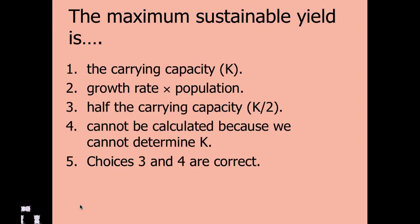Pause the video while you think about the question and begin it again once you get your answer. Hopefully you realize that choices three and four are correct: mathematically, the maximum sustainable yield is half of the carrying capacity, but because we don't know what the value for K is, we really can't figure out what the maximum sustainable yield is either.